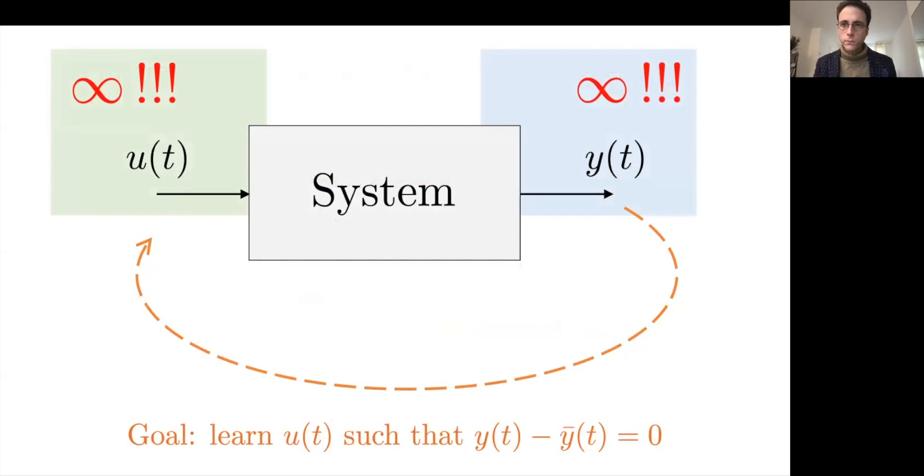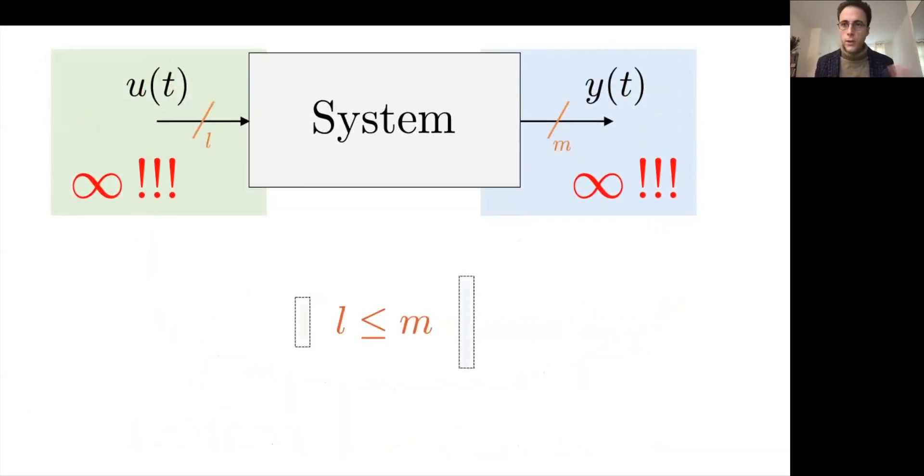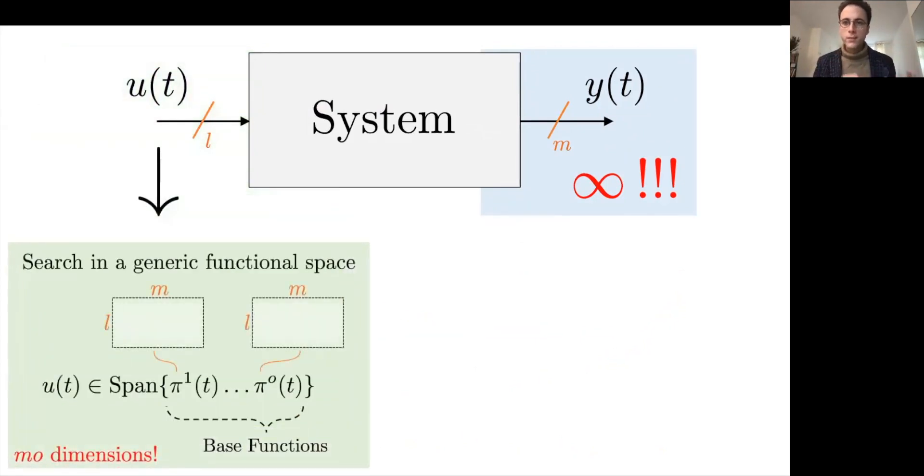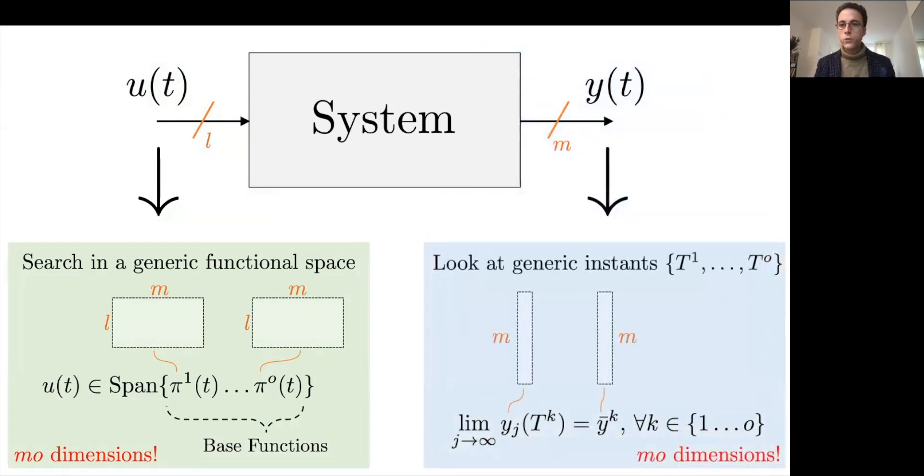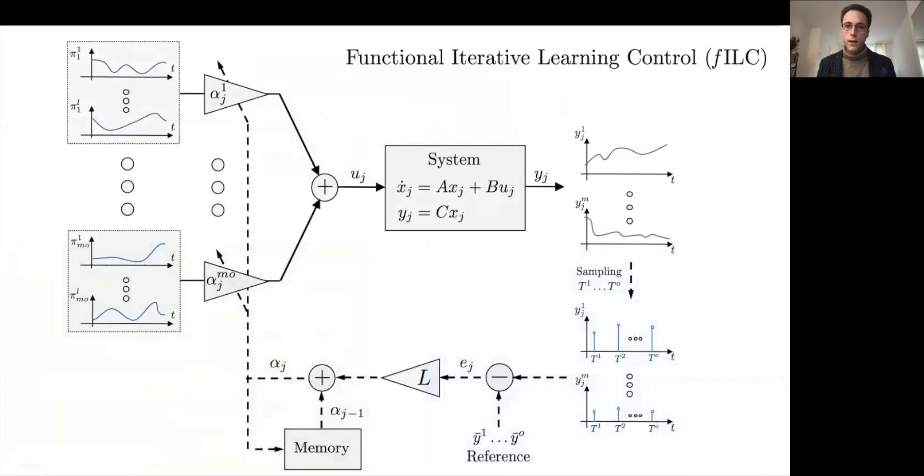So let's go back to our initial setting. As I said, we have, in general, a different number of inputs and outputs. Of course, the challenging case is more outputs than inputs, but also the other way around works in this framework. So what we do, instead of looking at piecewise constant functions in time for the input, we look at generic combinations of a set of basis functions that in general could be whatever. So a set of M multiplied by O functions as input domain and as output. This is where the second relaxation comes in. We just look at what happens at O generic points in time that does not need necessarily to be imposed by how the input is defined. And this is the functional ILC framework, how it looks like.